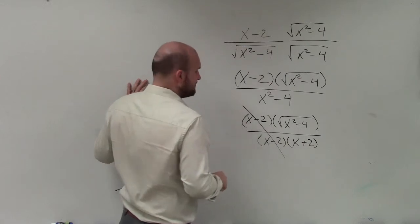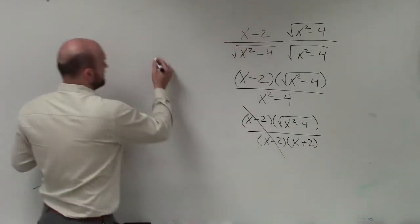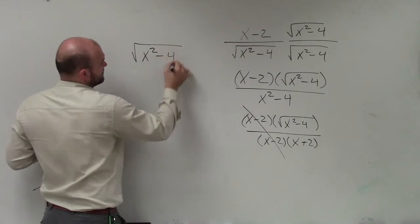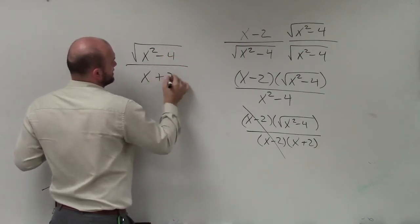So now the x minus 2 is divided into 1, and I'm left with a final expression as the square root of x squared minus 4 divided by x plus 2.